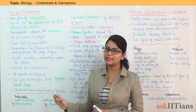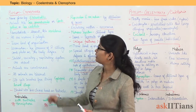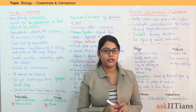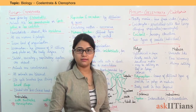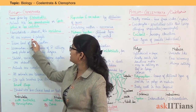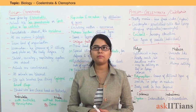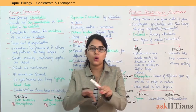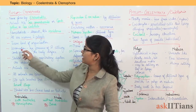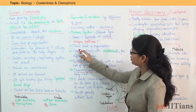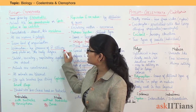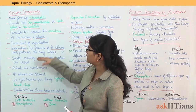Nematoblasts are absent in Ctenophora, which is why Ctenophora are known as Apnidaria — unlike Cnidarians. All are marine and pelagic, meaning the animals are found over the sea surface. They also show tissue level of organization. Locomotion occurs by the presence of eight ciliary comb plates on the body surface.